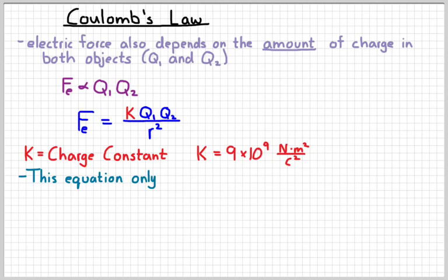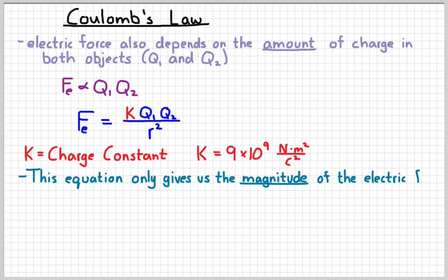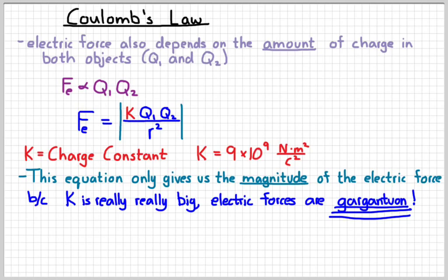Now, this equation only gives us the size or magnitude of the electric force. We really can't tell anything about the direction. We have to use our rules that opposites attract, likes repel. And so typically, that's written in absolute value bars like that, because we don't want to assume that we can get a sign out of that. And so it only tells us how big the force is, not what direction it's in.